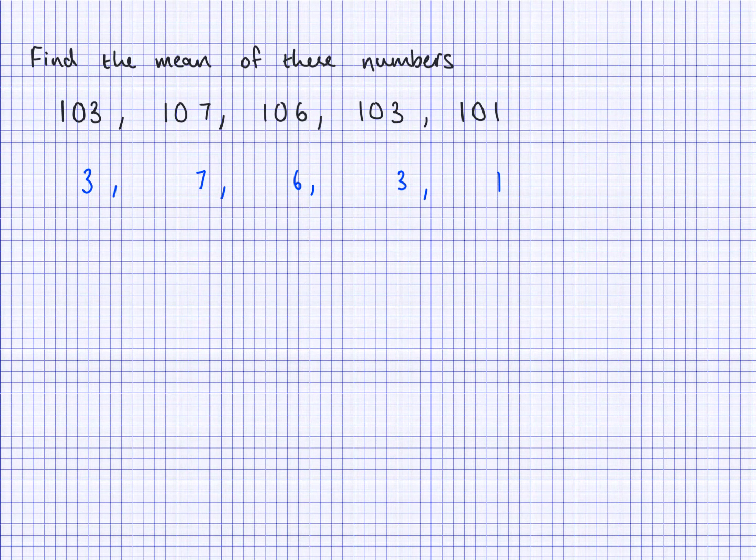Now if I find the mean of these numbers here, what I would have is 3 add 7, add 6, add 3, add 1, and I would divide that by 5 because there's 5 of them. So at the top I have 10 here, 16, 16 add 3 is 19 and then 20. 20 divided by 5 is 4. So the mean of the second set of numbers I have is 4.